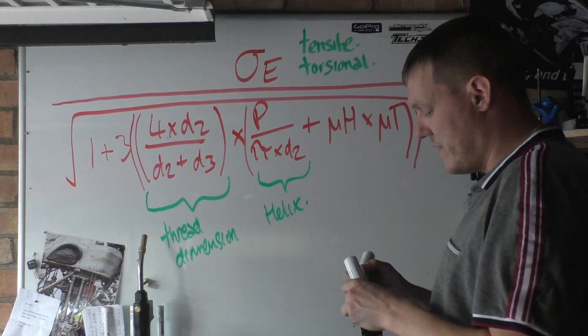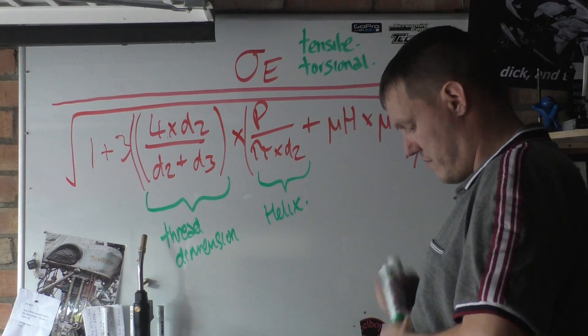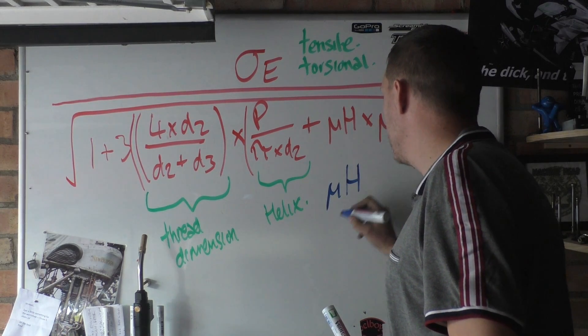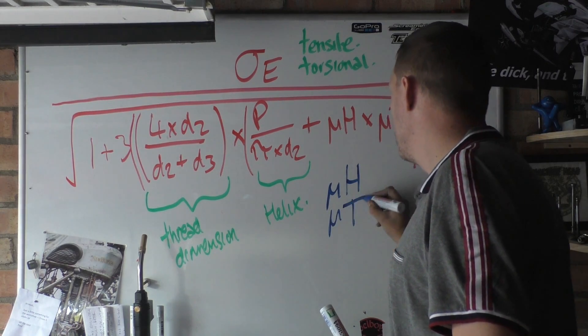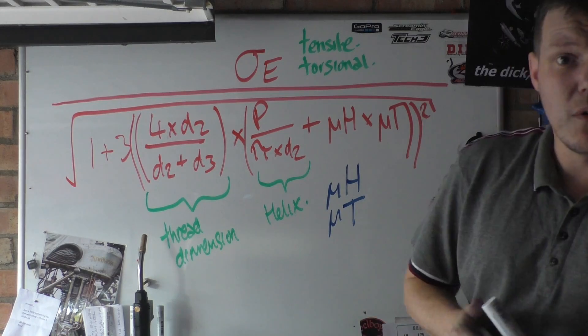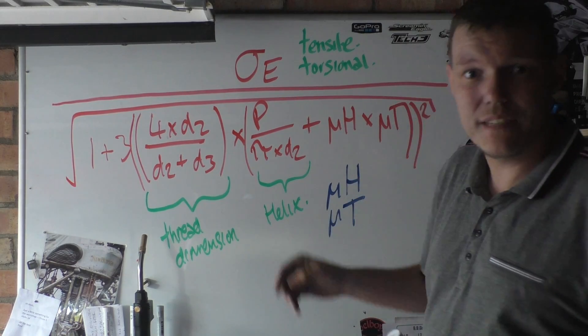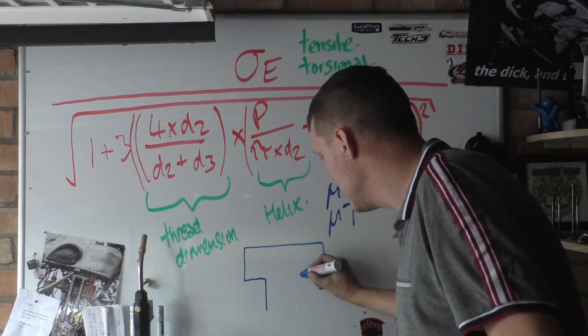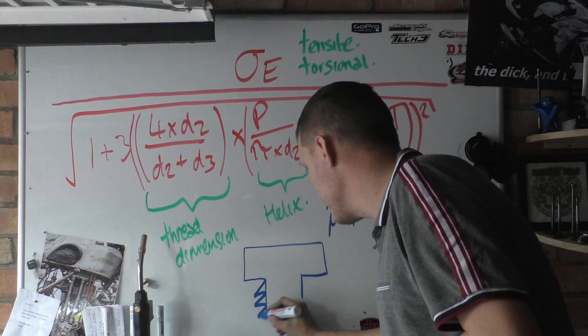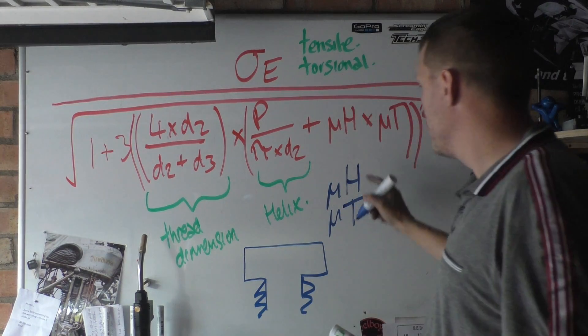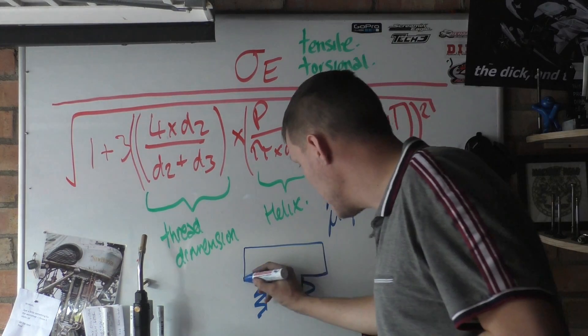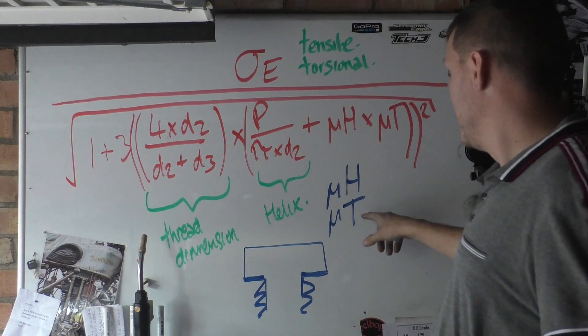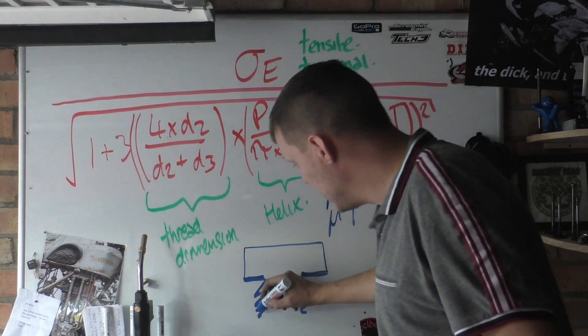And then we have this section here, which is what I want to concentrate more on. So this is the coefficient of friction of our head. There's the head of your bolt, and then we have our thread on it. So H is this section, the coefficient of friction here on our head. The coefficient of friction on our T is our threads.